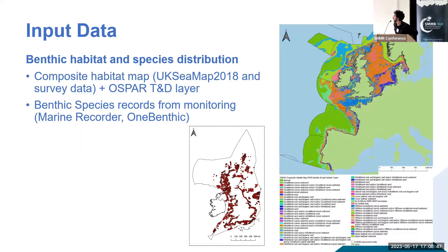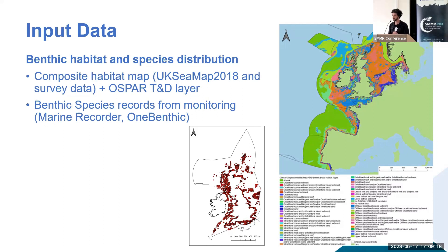A bit more detail on the input data. To know the distribution of benthic habitats, we use habitat maps. The composite habitat map is a combination of modeled information, but also evidence information from survey data. When we apply the indicator to assess threatened and declining habitats, we use a separate habitat layer that is produced by OSPAR using up-to-date data submitted by OSPAR contracting parties every year. On top of this, we also use evidence from survey data. The indicator uses present information on the abundance of benthic species from offshore surveys records, generally sourced from Marine Recorder or the OneBenthic database.